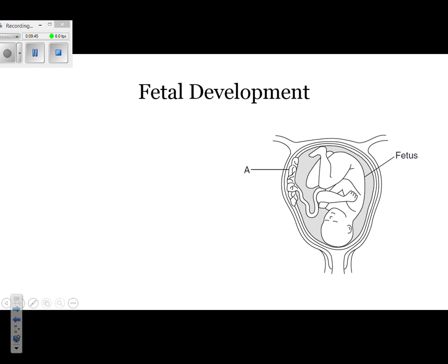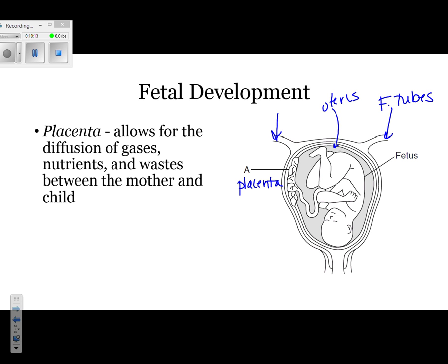Next is fetal development. In the image, you can see the baby developing inside the mother's uterus — the entire structure where the baby is. On either side are the fallopian tubes. Structure A is the placenta, which provides the baby with nourishment. The placenta allows diffusion of gases, nutrients, and waste between the mother and child. Toxins from the mother can also diffuse across, which is especially harmful since the baby is still developing all of its major organs and arteries.